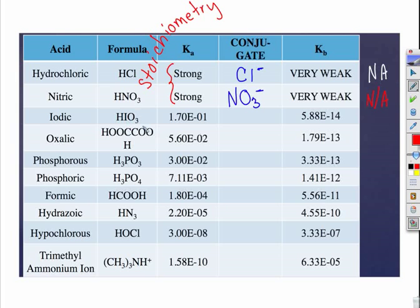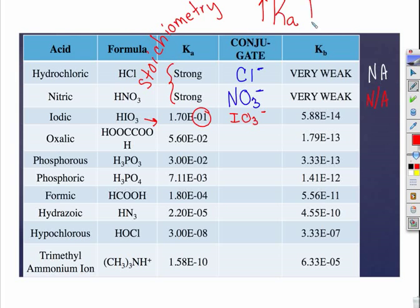Iodic acid, HIO₃: the conjugate would be IO₃⁻. Now this is a pretty big Ka, which means HIO₃ is going to dissociate pretty close to 100%. Remember from our last unit: as we increase Ka, we increase the amount of product formed, and in this case we increase the strength of our acid.